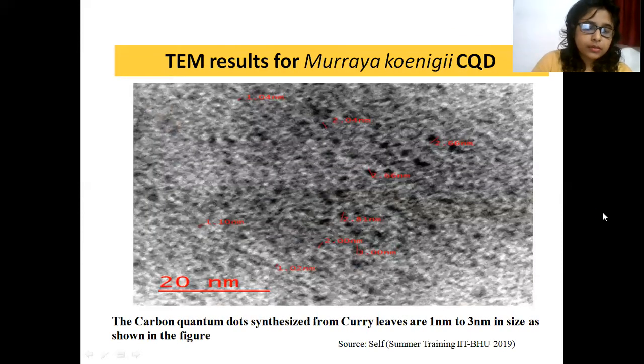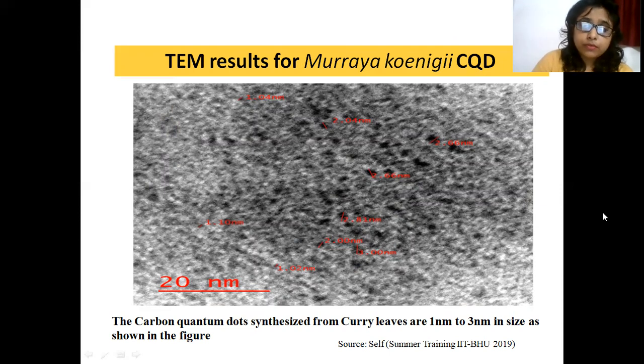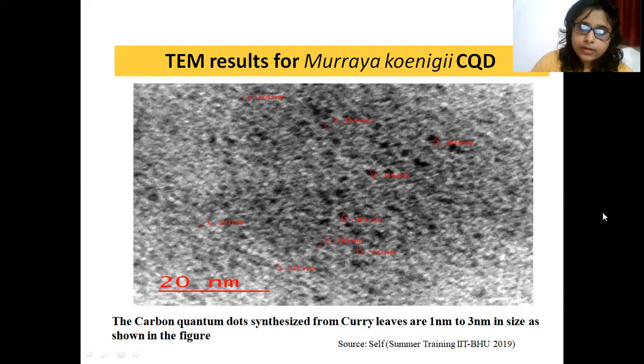TEM results confirm that carbon quantum dots which I have prepared are from 1 nanometer to 3 nanometer in size as you can see in the image. And due to such small size from 1 nanometer to 3 nanometer, it emitted blue fluorescence under UV light.